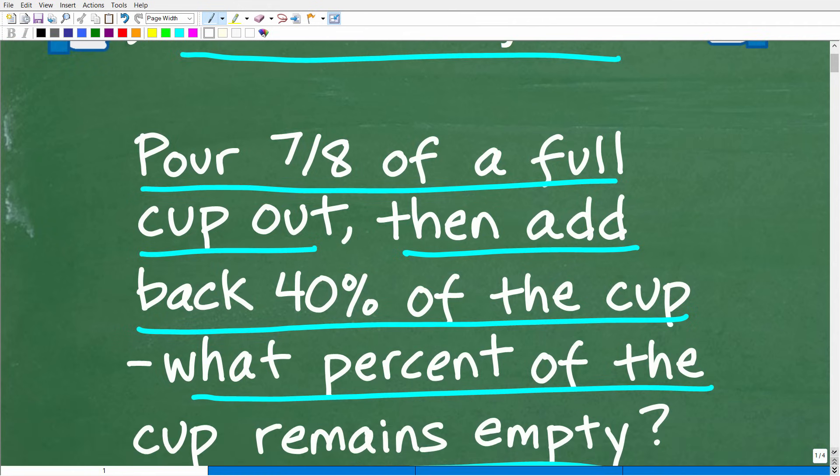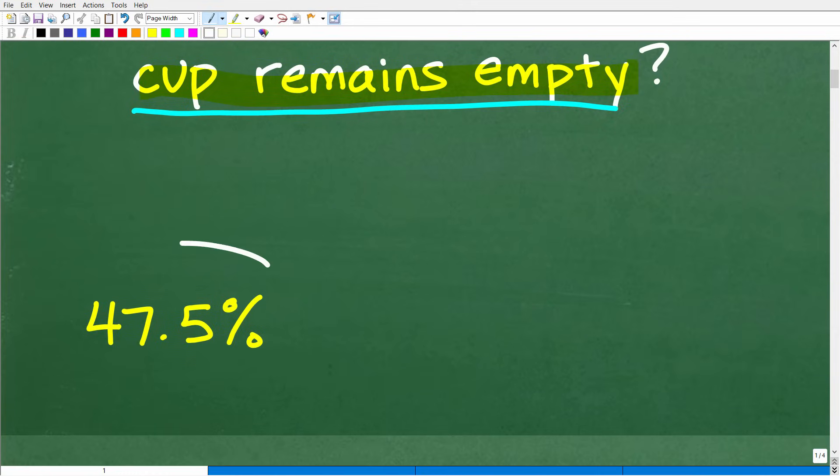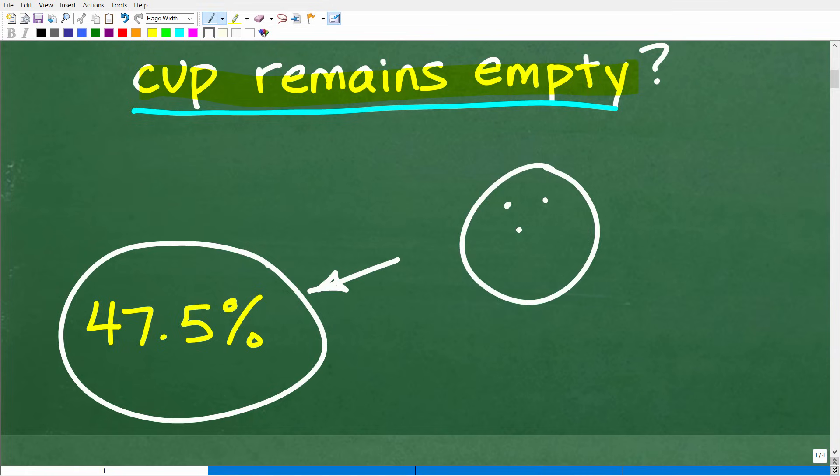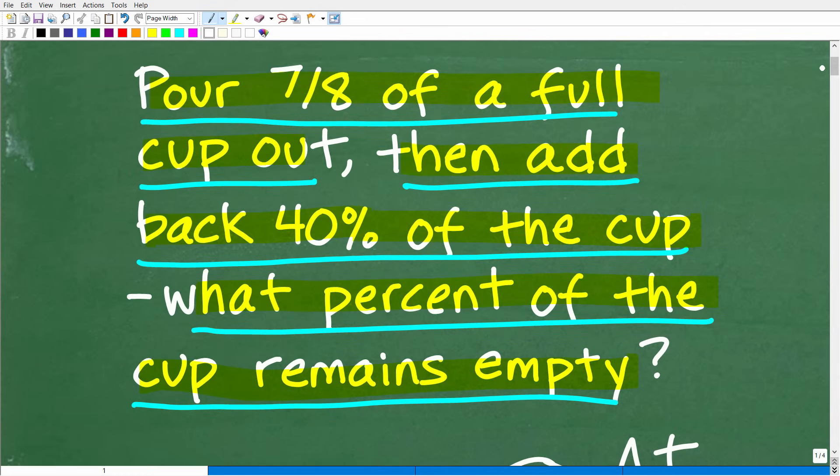All right, so one more time with the question before I show you the answer. We're talking about something like a cup of water. We're going to pour 7/8 of this full cup of water out, then we're going to add back 40% of the cup. So the question is, what percent of the cup remains empty after doing all of that? Well, let's go ahead and take a look at the answer. The correct answer is 47.5%. Okay, so how did you do? Well, if you got this right, let's go ahead and celebrate by giving you a nice little happy face and A plus, 100%, and multiple stars. You could brag to your family that indeed you are a certified professional expert in the area of fractions and percentage.